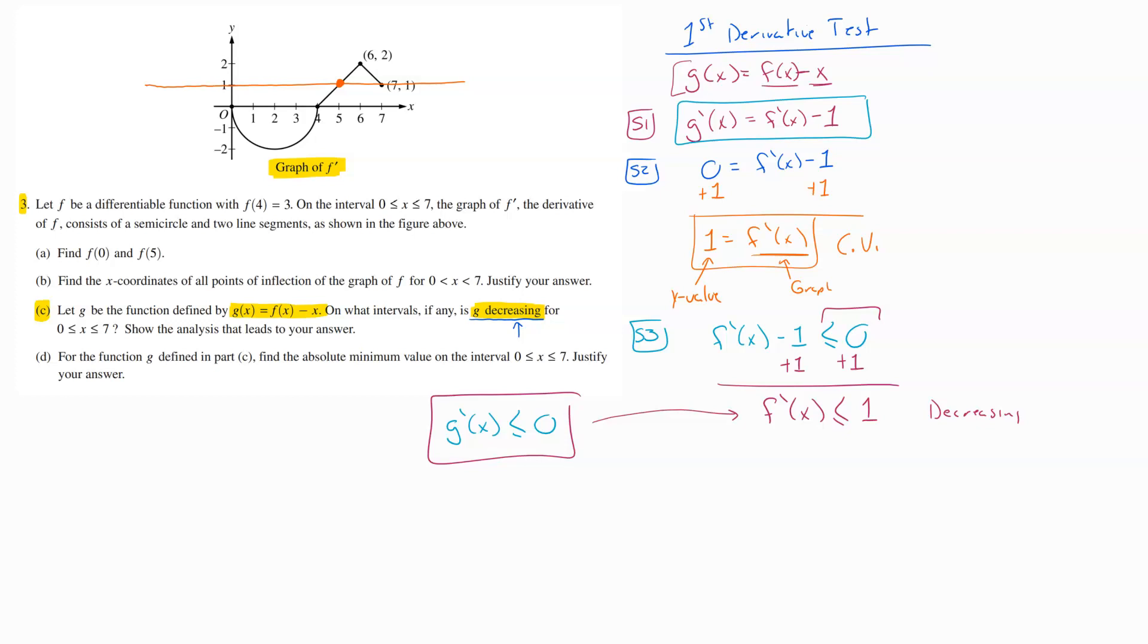Looking back up here, I can see that that less than one portion, that is all this section here of my graph because all of that is less than one. This is a Y value right here, and we marked that earlier. This is Y equals one. So whenever the graph is less than one, that's when our G of X graph is decreasing.